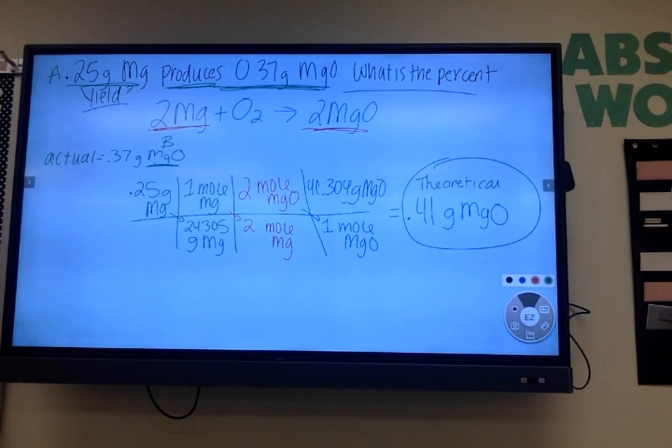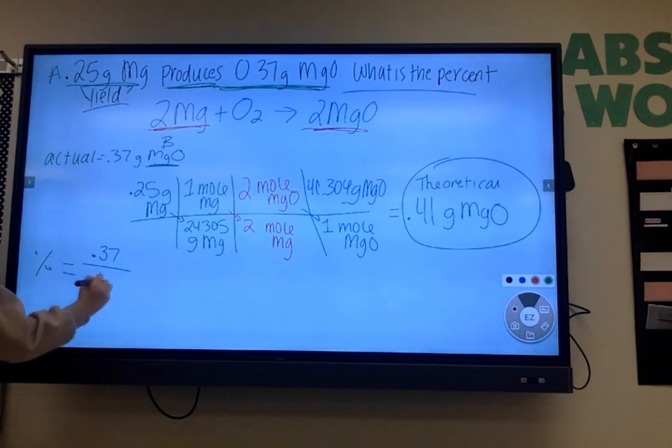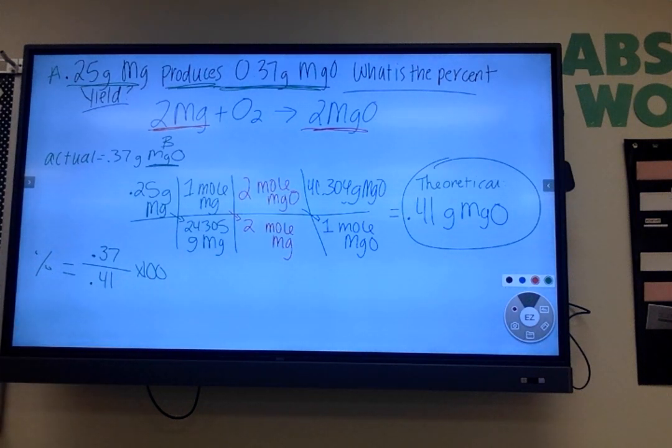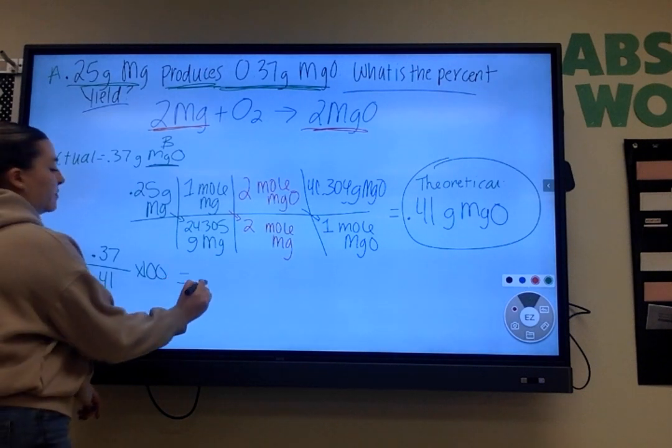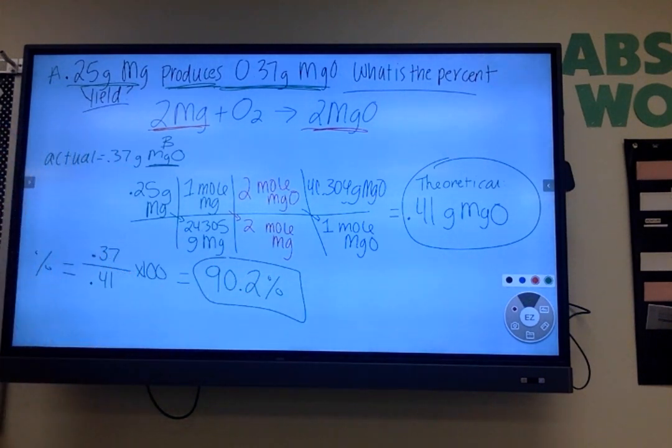So now that I know what my actual is and what my theoretical is, I can plug that into my percent yield equation. What goes on top? We just wrote it down. Actual over theoretical. Every single time. So to solve for percent yield, I'm going to put 0.37 divided by 0.41. I'm going to hit enter my calculator, then multiply it by 100. Somebody let me know what you get. Adam, do you have it? 90.2. 90.2 you said? Perfect. That would be my percent yield. Any questions?